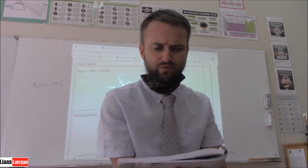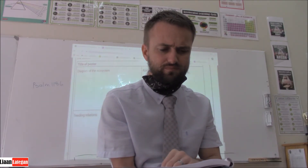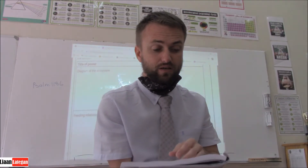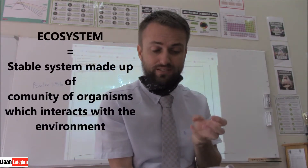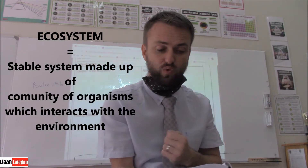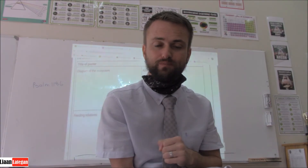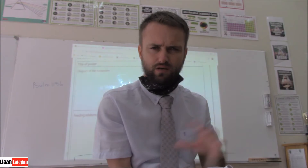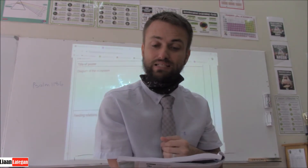We will talk more about adaptation when we get to unit 6. The size of an ecosystem is not specifically defined. We can also define an ecosystem as a stable system made up of a community of organisms which interact with the environment. Two important keywords to note: gradient, which is the degree to which a slope ascends or descends, and habitat, which is the place where an organism lives.